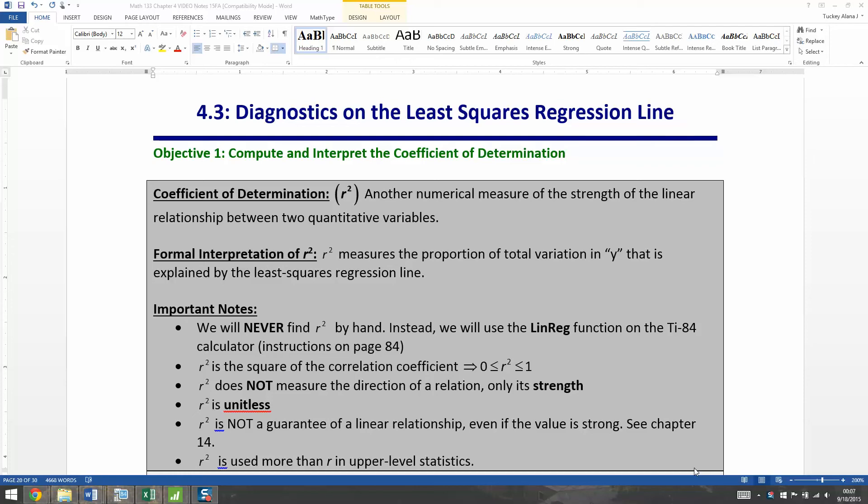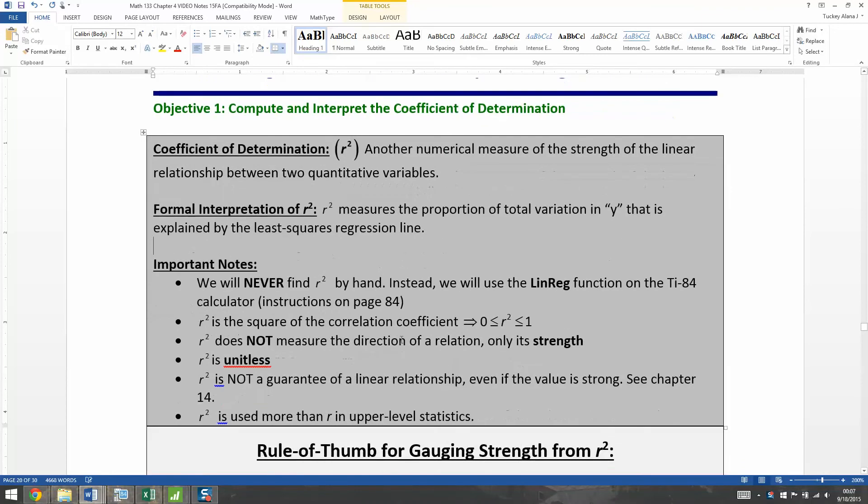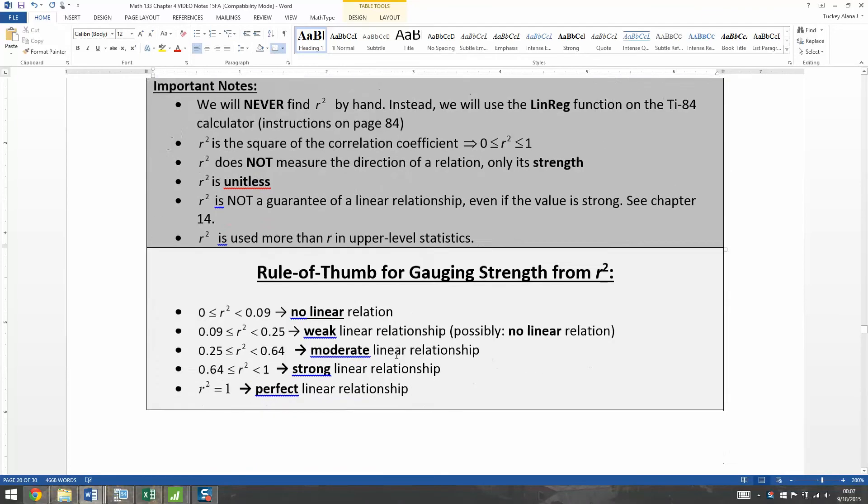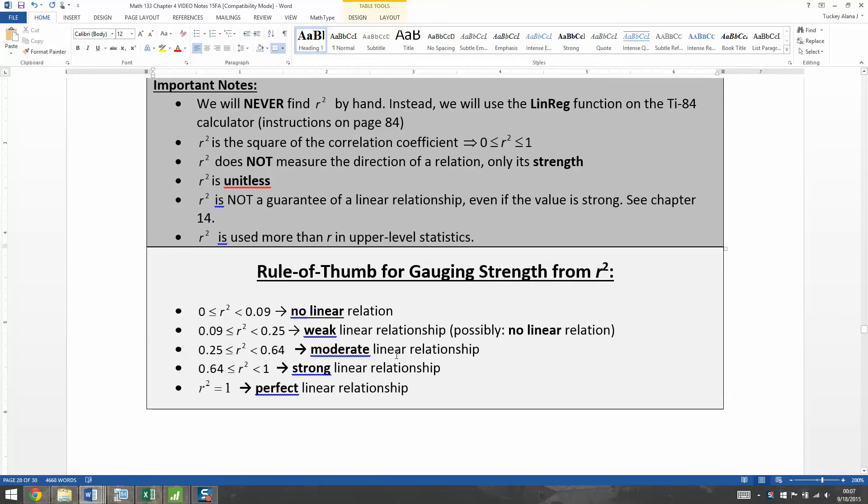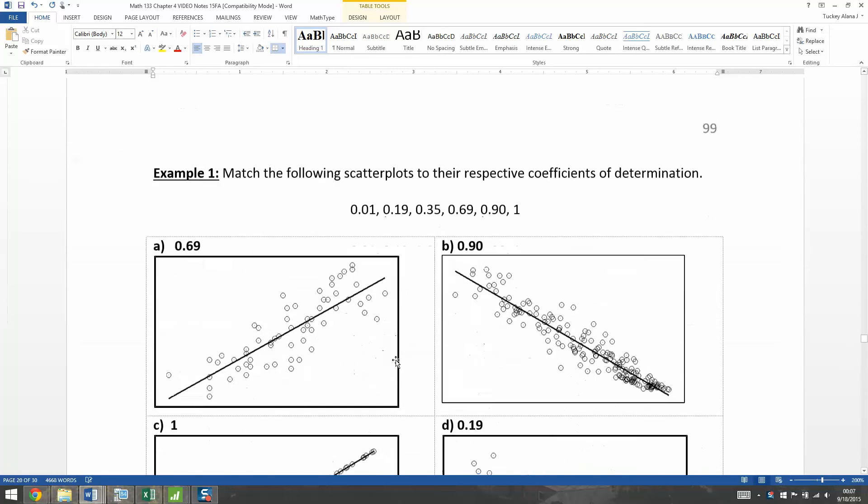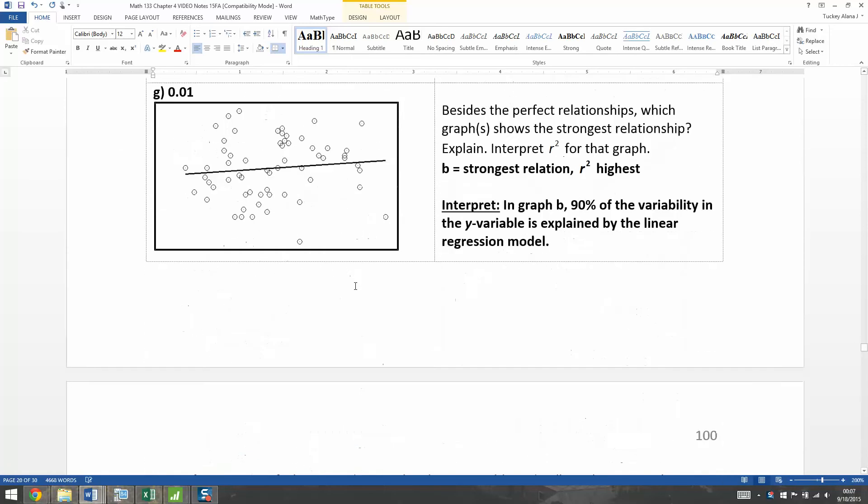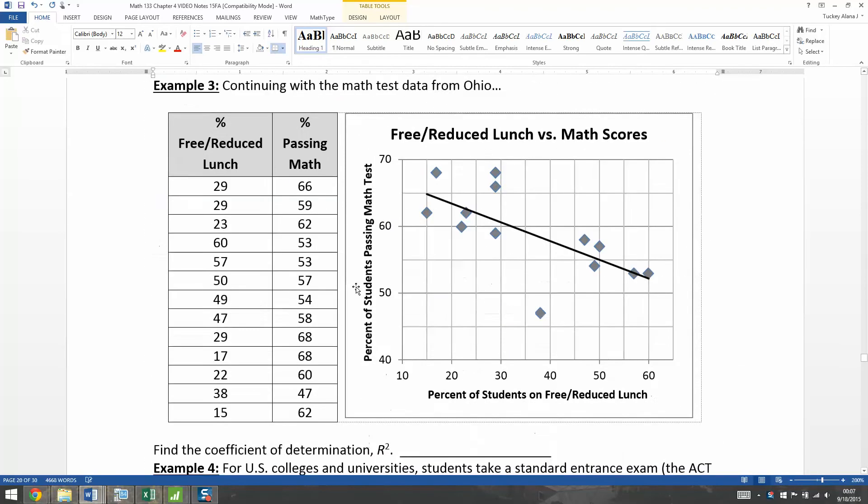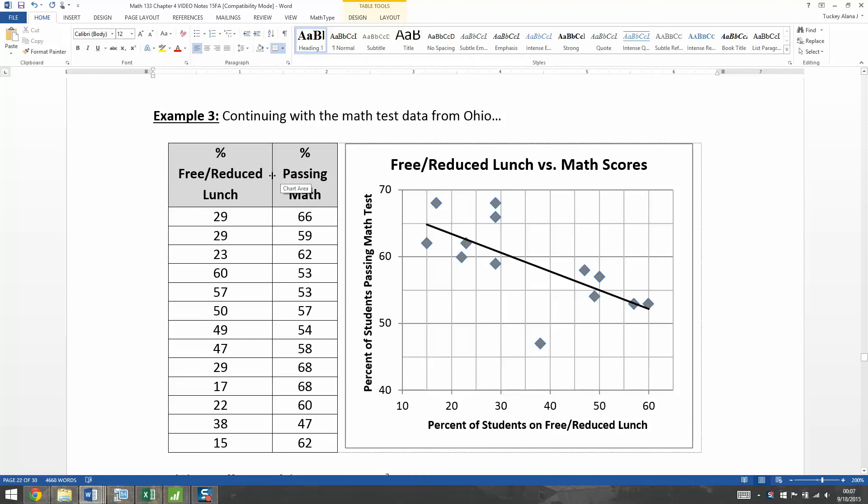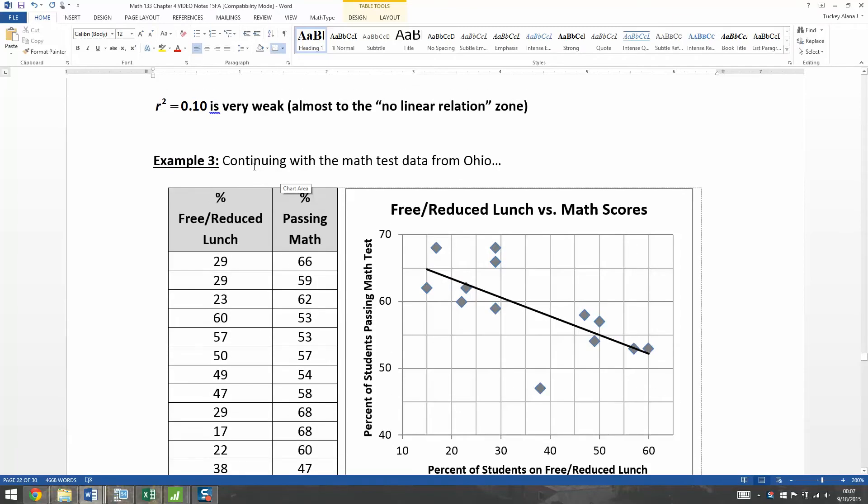Just a quick reminder that in the last video we learned about the coefficient of determination R-squared and how it can help us measure the strength of regression relationships, in particular for our course linear relationships. And then we saw all these different examples of scatter plots, and now we want to be able to calculate the coefficient of determination ourselves with a calculator.